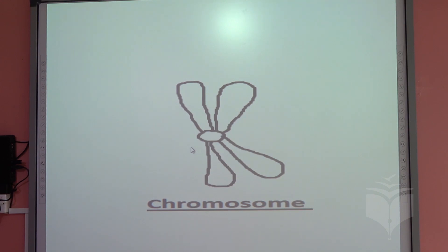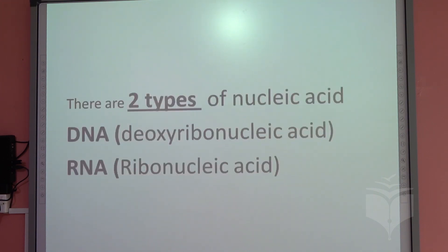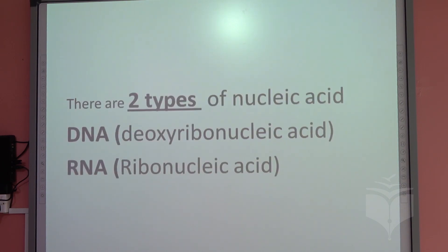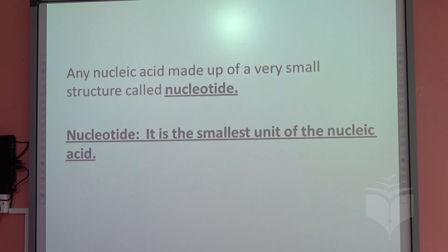Now let's talk about the chromosome and the structures that make it up. The chromosome is made up of genes, and the gene is made up of a very small structure called nucleic acid. There are two types of nucleic acid: DNA and RNA. The full name of DNA is deoxyribonucleic acid, and RNA is ribonucleic acid.